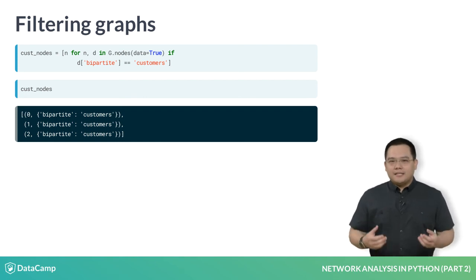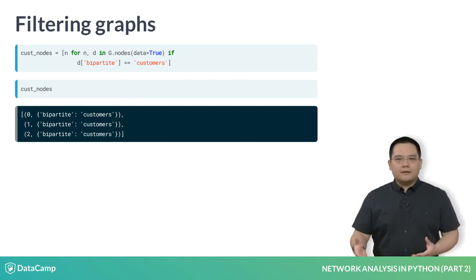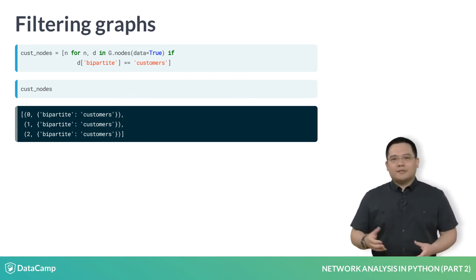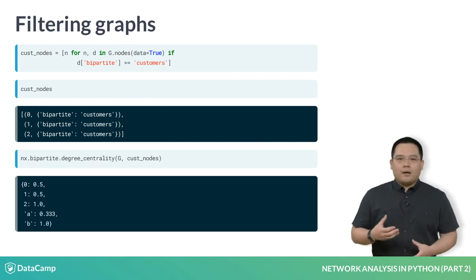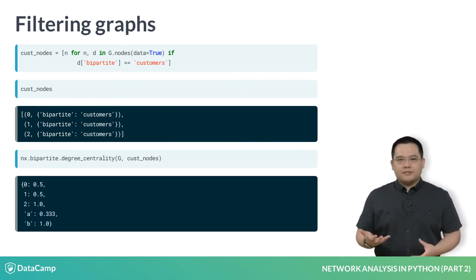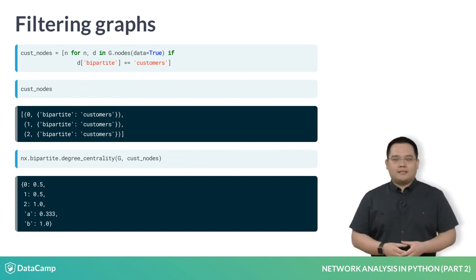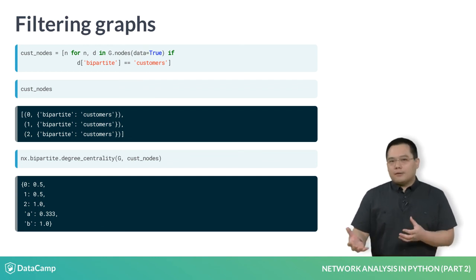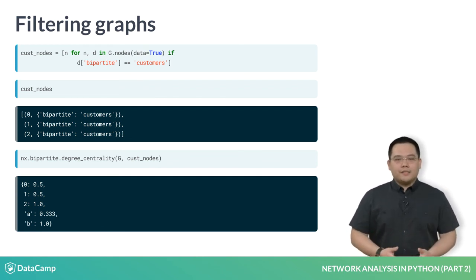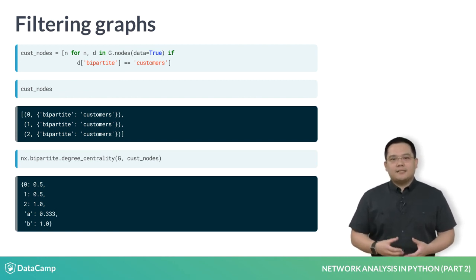As a teaser for how this gets used later, we can get the bipartite degree centrality of a graph by calling on the bipartite degree centrality function, which requires a graph G and a list of nodes from one partition as its arguments — it can be either partition. In the example above, we're using the cust_nodes partition. This API design is a design choice by the bipartite module creator and provides a lot of flexibility.